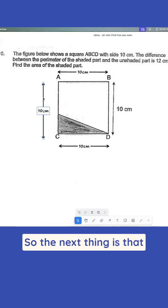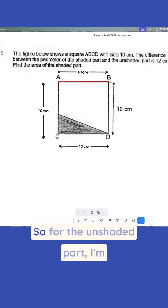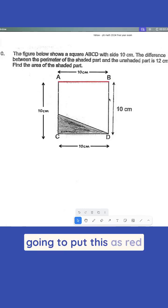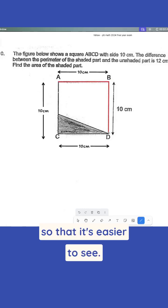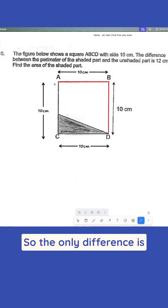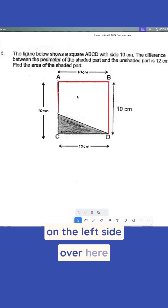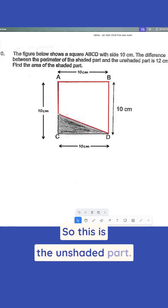So the next thing is that I want to also highlight the different perimeters. So for the unshaded part, I'm going to put this as red so that it's easier to see. So the only difference is that there is this on the left side over here and also this part over here. So this is the unshaded part.